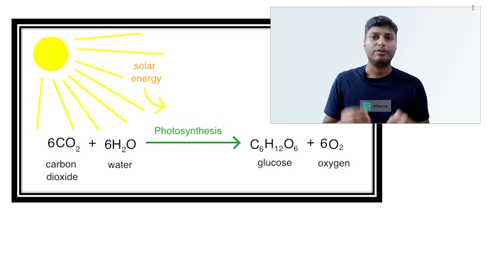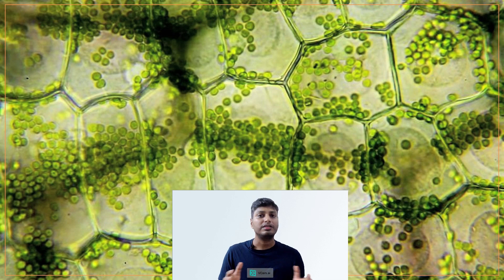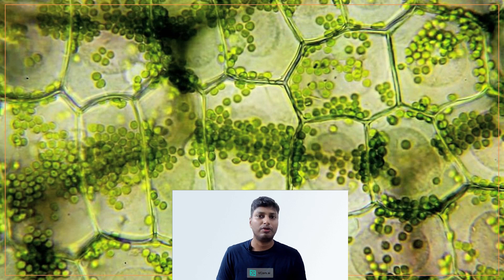In today's video we are going to understand how exactly green plants use sunlight and what they form from it. Inside green plants, in certain parts like leaves and the stem, there are cells called mesophyll cells. Inside these cells there are special organelles called chloroplasts, which are extremely important because they contain photosynthetic pigments that help in the absorption of sunlight.